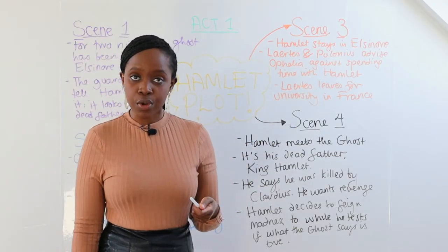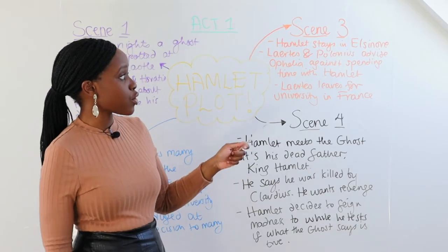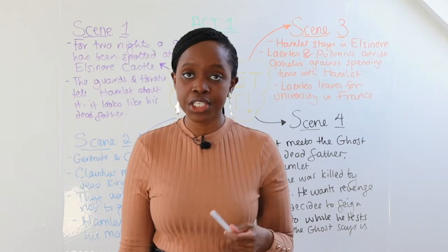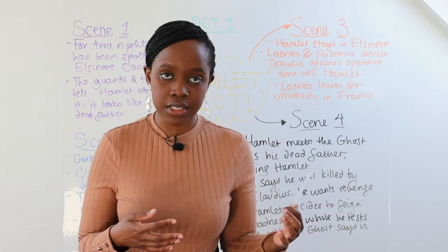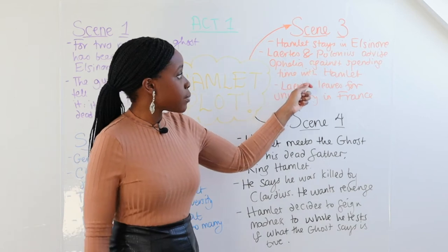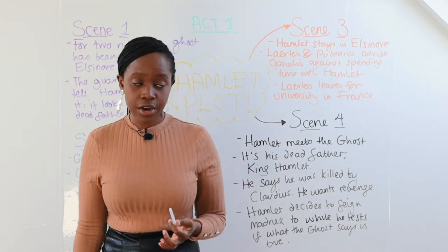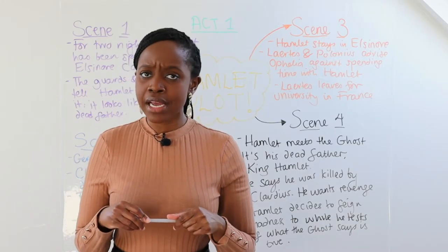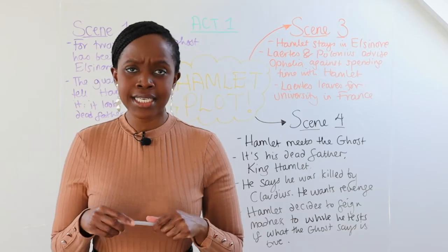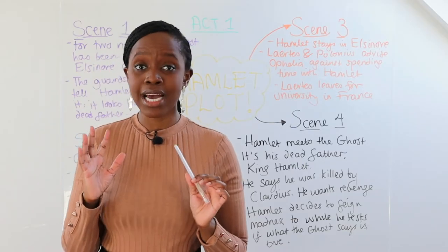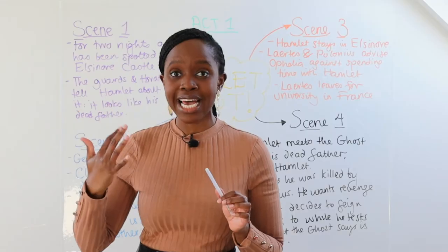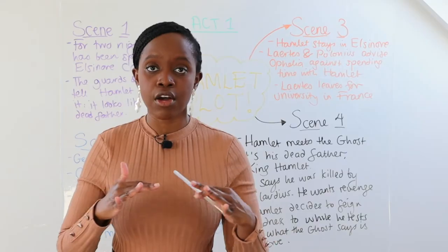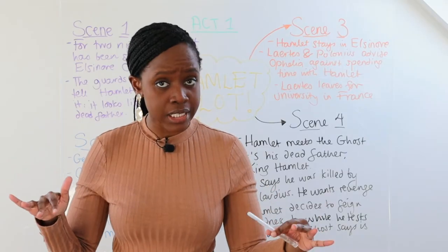In Act One, Scene Three, Hamlet decides to stay in Elsinore rather than return to Wittenberg University. We're also introduced to Laertes and Polonius — Polonius being a courtier and close advisor of King Claudius. Laertes and Polonius advise Ophelia, Polonius's daughter, not to have a close relationship with Hamlet. Ophelia is a love interest of Hamlet, but she's not of the same social class — Prince Hamlet is royalty.